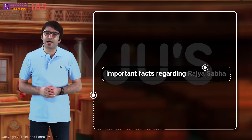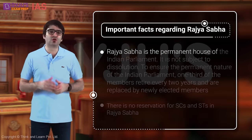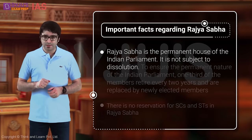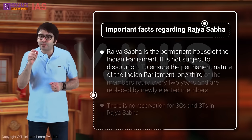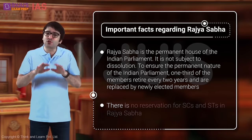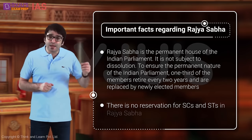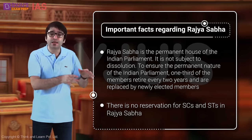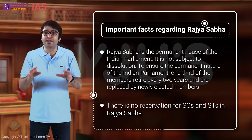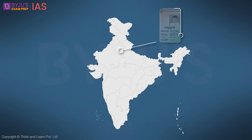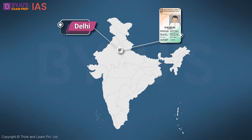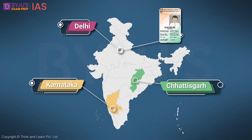Important facts regarding Rajya Sabha: it is the permanent House of Indian Parliament and is not subject to dissolution. To ensure its permanent nature, one third of the members retire every two years. There is no reservation for SCs and STs in Rajya Sabha, unlike in Lok Sabha and Legislative Assemblies. Voting takes place through open ballot. You only need to be a registered voter in any parliamentary constituency in the country to contest Rajya Sabha elections — for example, a registered voter in Delhi can contest from Karnataka or Chhattisgarh.